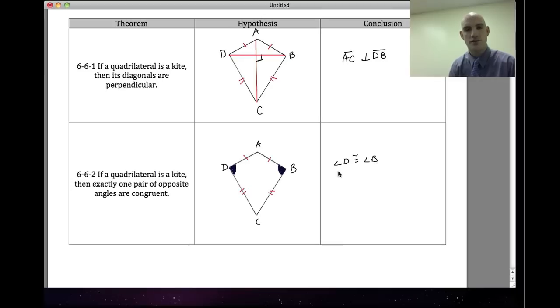But what that implies for us is that angle A is not congruent to angle C. So if one of the sets is congruent, the other set can't be congruent. Those are the two properties of kites that we're going to use to work with our kite problems.